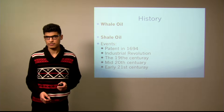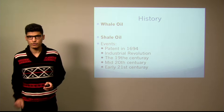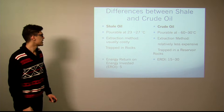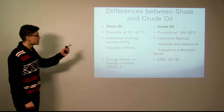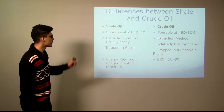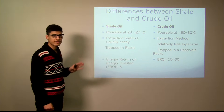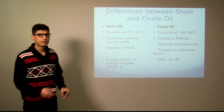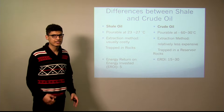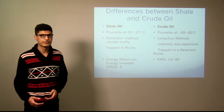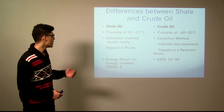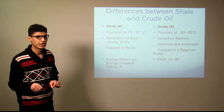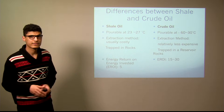The difference is in terms of transportation: shale oil is only transportable between 23 and 27 degrees Celsius, whereas crude oil ranges from negative 60 degrees Celsius to 30 degrees Celsius. That's very important in terms of the existing pipeline system we have.